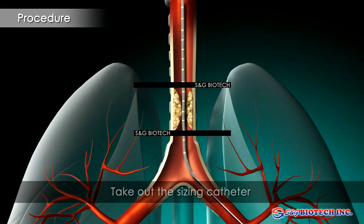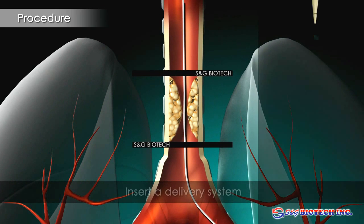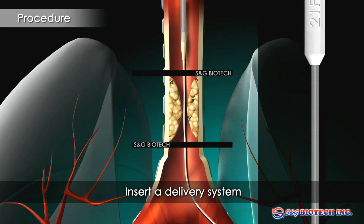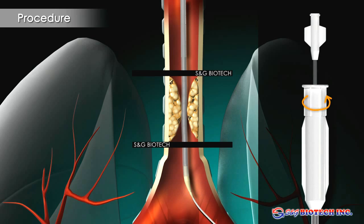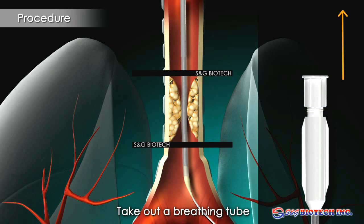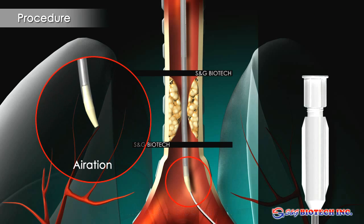Take out the sizing catheter. Insert a delivery system. The patient's airway is protected during the procedure by a breathing tube on the delivery system.